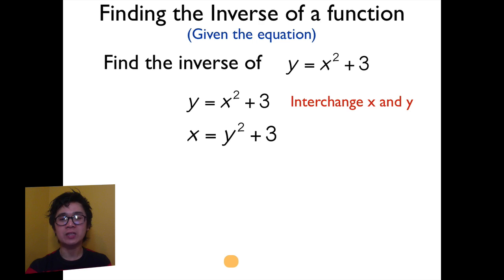After interchanging the value of x and y, you are now going to solve for the value of y. And by doing so, we are going to get rid of 3 so we can isolate y squared on the right side of the equation. And we'll have y squared equals x minus 3.